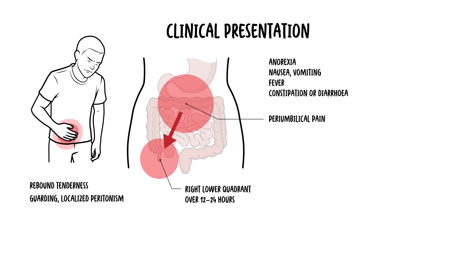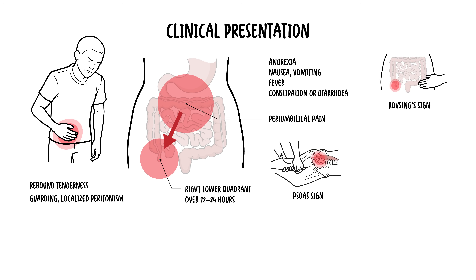Rebound tenderness refers to pain or discomfort felt upon the release of pressure from the abdomen where you are palpating. Signs such as Rovsing's, psoas, or obturator signs may be present in appendicitis, depending on the location of the appendix.